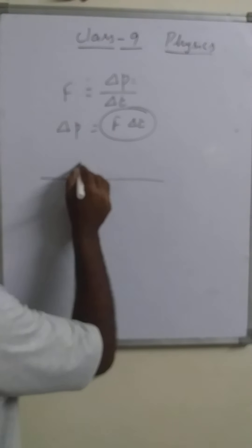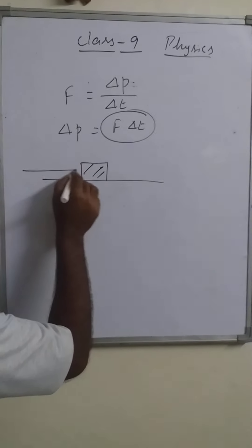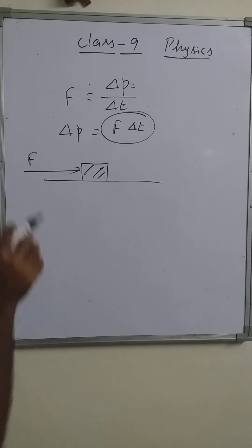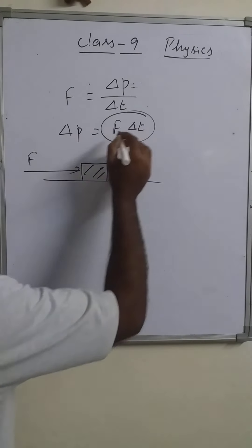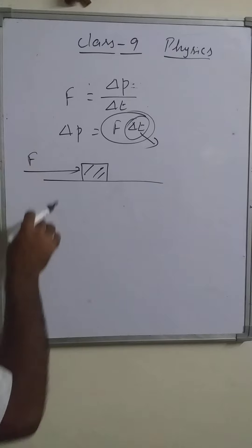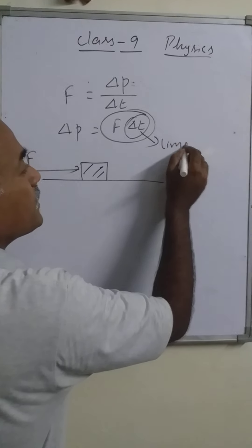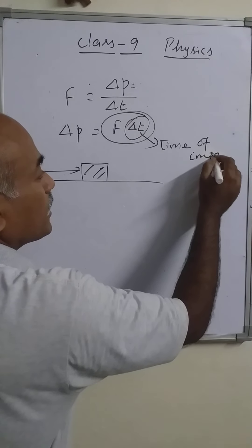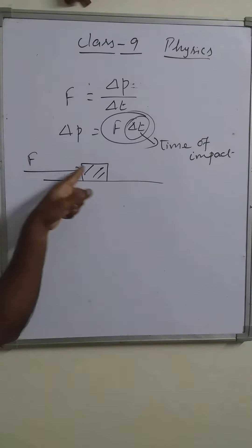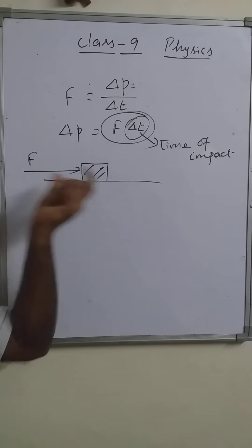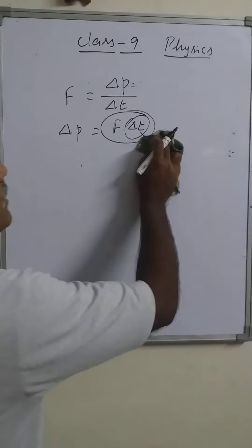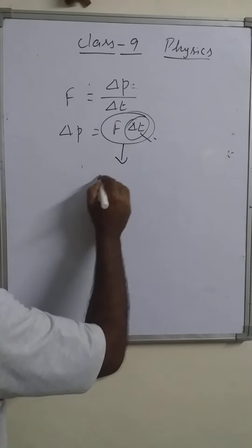Suppose any object is placed on a horizontal surface and a force is applied on it. The interval of time for which the force is applied is called the change in time, and that time for which the force is applied is also known as time of impact — meaning for how long the force is applied and how much impact is produced by that force.